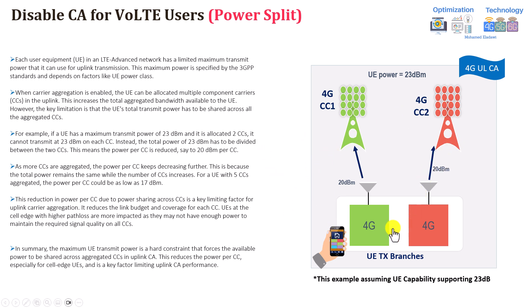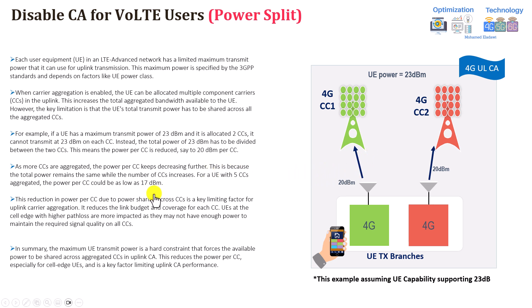As shown in the figure on the right, assuming this is the transmission from the UE side — with two TX branches and a maximum power of 23 dBm — the main idea is that you have one primary carrier and one secondary carrier. The UE needs to split the 23 dBm power, so it uses around 20 dBm on each carrier, reflecting into less power per carrier. Even though the maximum is 23 dBm, because the power is being split, it loses around 3 dB. For more than 2 carriers, this reduces even further. Usually the maximum uplink carrier aggregation supported by UEs is 2.